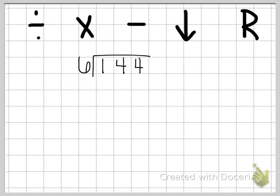Our first step is to divide. We're doing 144 divided by six. Remember the number inside the house is what we're dividing, and the six tells us how many groups we need to make. So we're going to do one divided by six. This number one is smaller than the number I'm dividing by, so six goes into one zero times. I'm going to put a zero up in my hundreds place. Then I multiply six times zero, which is zero. Then subtract: one minus zero is one. Then we bring down the next digit — just the four, not both of them.